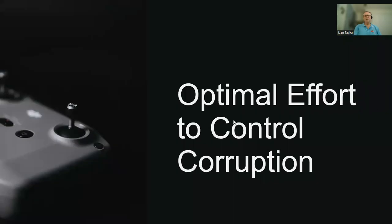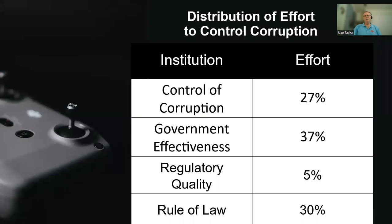One thing we can do with this model is look at the effort needed to control corruption by investing in improvements in the interrelated institutions. When we looked at effort distributed amongst the various institutions, four institutions stood out as good places to invest. We found that 27% of effort would be devoted directly to control of corruption, 37% to improving government effectiveness, 5% to regulatory quality, and 30% to rule of law.